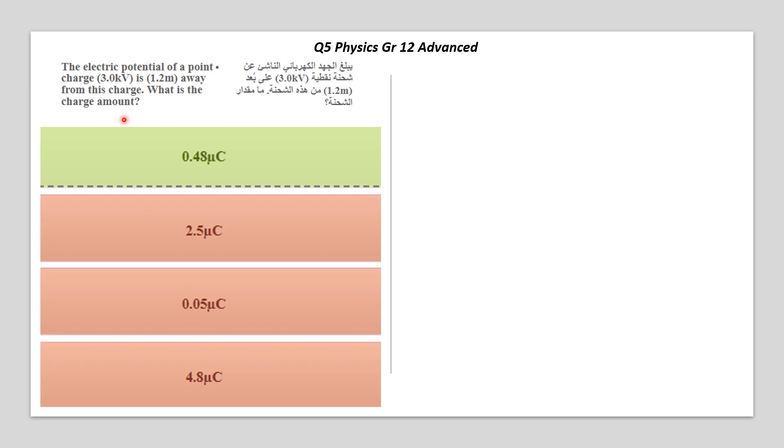The charge means Q. In this question, V is given - the electric potential or the voltage. The distance from that point is 1.2 meters, and we're asking for Q, the charge. So combining all of that, you need to remember this equation.